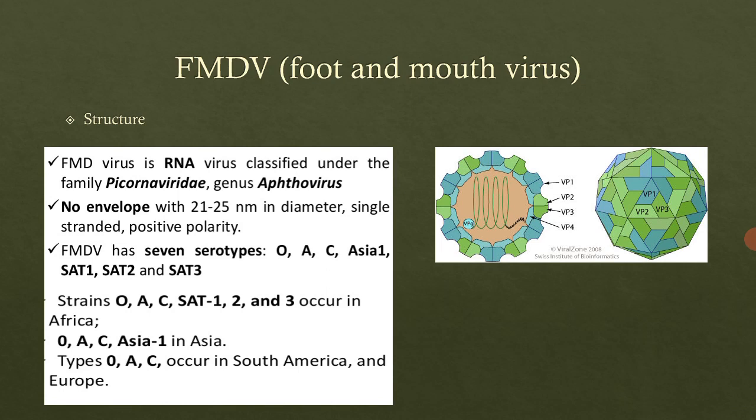We will start with the structure of the FMDV — the foot and mouth disease virus. The FMD virus has an RNA genome and is classified under the family Picornaviridae. The family Picornaviridae has the genus Aphthovirus — this is the special genus of this virus.